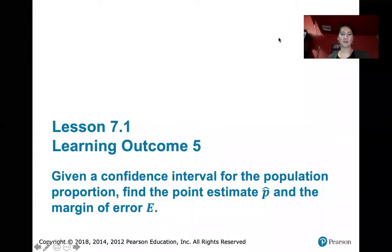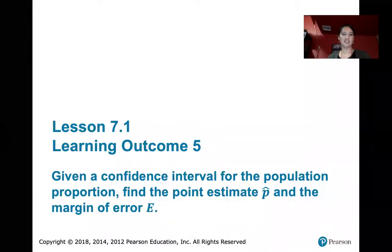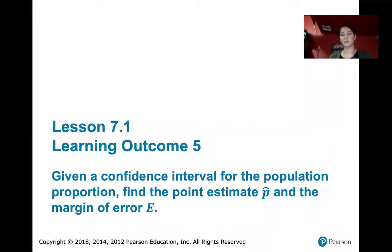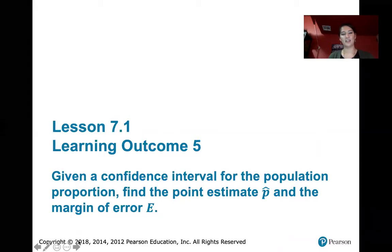In this video we discuss learning outcome number five from Lesson 7.1. We are trying to find the point estimate p-hat and the margin of error e when we're given a confidence interval for the population proportion. That's what we're going to discuss in this video.